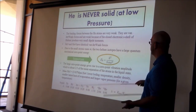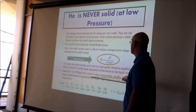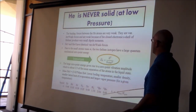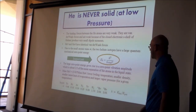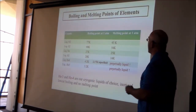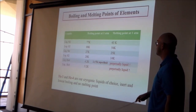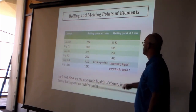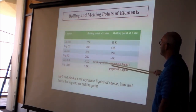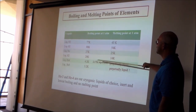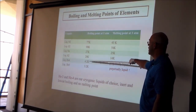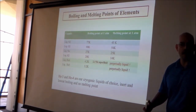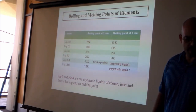Because helium-3 has a bigger zero-point energy, it has a lower boiling temperature, a smaller density, a smaller latent heat, and a larger vapor pressure. This slide shows the melting and boiling points of different atoms. Helium-3 and helium-4 are always liquid — they only change from liquid to vapor. Helium-4 does so at 4.2 Kelvin, and helium-3 at 3.2 Kelvin at one atmosphere of pressure.